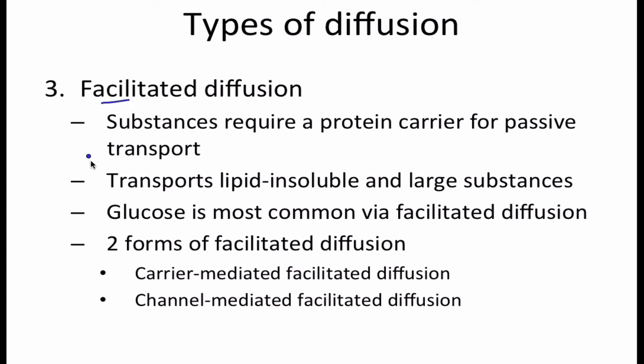Let's go ahead and talk about some different types of facilitated diffusion. Sometimes substances are required to be carried across using a protein. It transports lipid insoluble or large substances. So regular diffusion is going to occur through really small or lipid soluble materials. However, facilitated diffusion can occur with lipid insoluble materials. Glucose is one of the most common that undergoes facilitated diffusion. There are two forms of facilitated diffusion. You have carrier mediated diffusion.